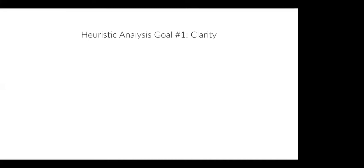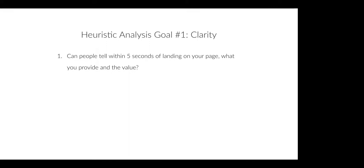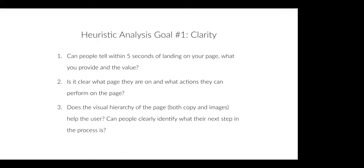Here are a few questions you can ask yourself while looking at a page. Can people tell within five seconds of landing on your page what you provide and what the value is? Is it clear what page they are on and what actions they can perform on the page? Does the visual hierarchy on the page — both the copy and the images — help the user? Can people clearly identify what their next step in the process is? Those are the three questions to ask yourself on every page when doing a heuristic analysis.